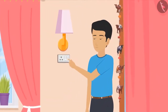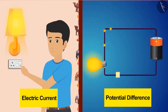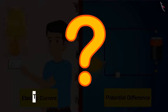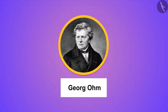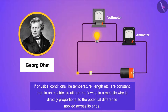We have dealt with two very important quantities related to electricity — electric current and potential difference — which form the foundation of electricity in physics. The question is: do these two quantities work separately, or is there a relationship between them? A German physicist named George Ohm learned from his experiment that there is a relation between electric current and potential difference. Ohm states that if physical conditions such as temperature and length are constant, then in an electric circuit the electric current flowing in a metallic wire is directly proportional to the potential difference applied across its ends. The question then arises: in what ratio does electric current increase and decrease? Ohm named this ratio as resistance.